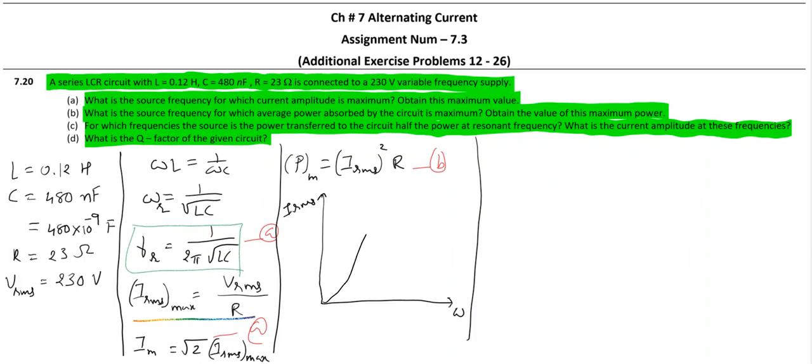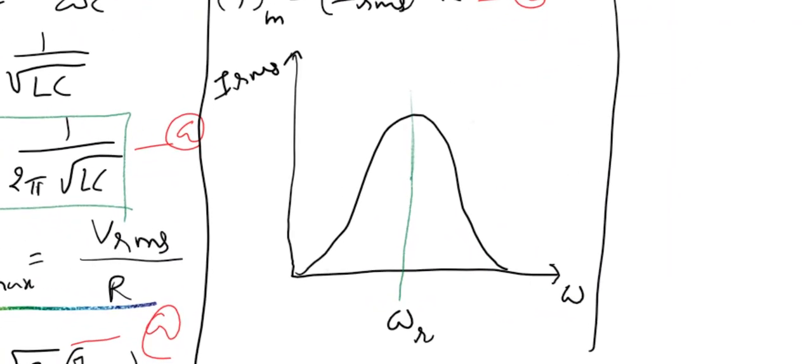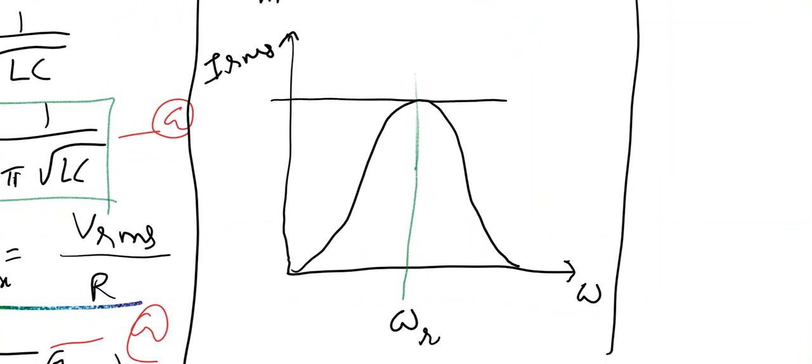So this is the value of omega at resonance, so we call it omega_r. And at that point, whatever is the rms value of current is I_rms max. And somewhere here, where I_rms max becomes root 2 times less, the power becomes half, and corresponding to this we have two values of omega.